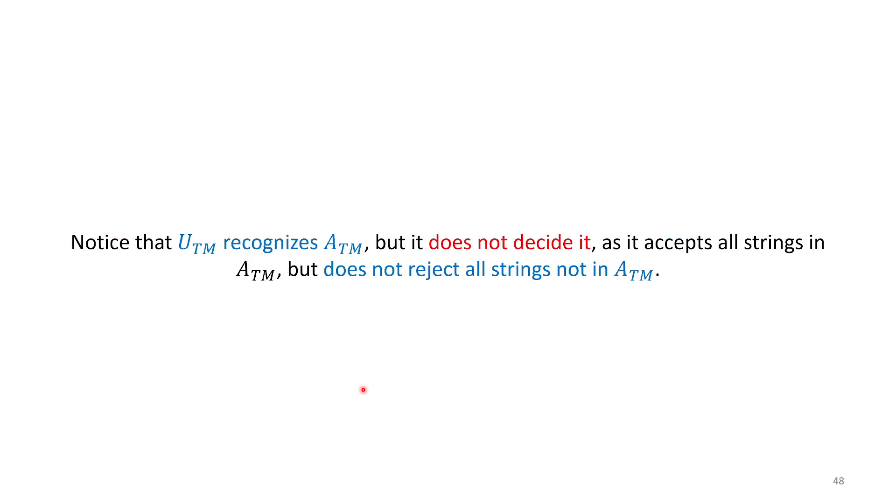Let's notice that the universal Turing machine recognizes ATM, but it does not decide it. To decide it, it has to reject all strings not in ATM, including the ones the Turing machine might run forever on.